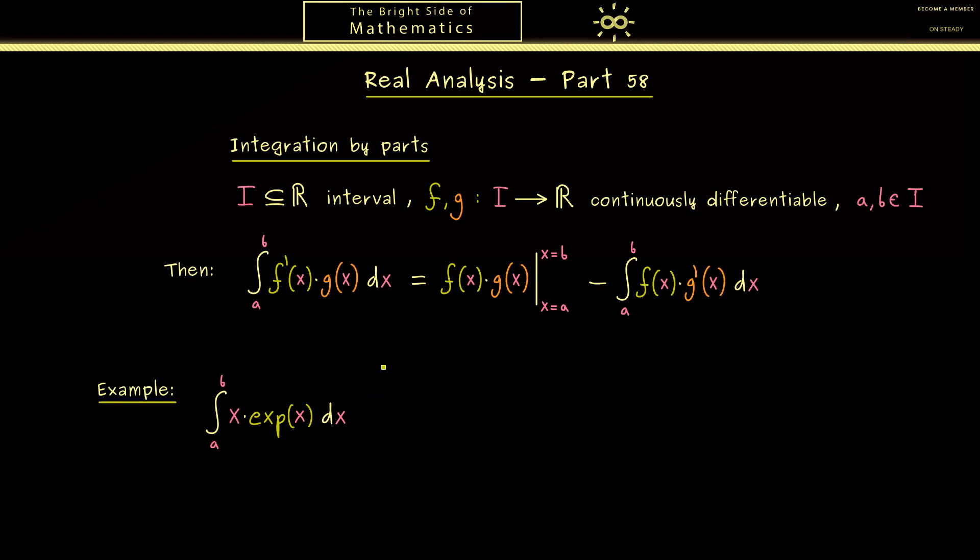Here you might not know the antiderivative immediately, and therefore we could apply integration by parts. It's always worth a try. However, there could be different possibilities to assign the functions f and g here. Indeed, it will be helpful that the exponential function is our function f'. Therefore, x is our function g. We do this because we know the antiderivative of the exponential function and we know that the derivative of x is very simple.